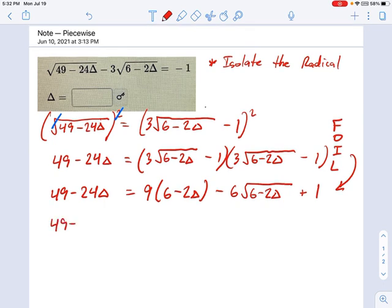And let's keep going here. We have 49 minus 24 delta equals what's 9 times 6, that's 54, 9 times 2 is 18, plus 1, I'm going to get that over there. And let's keep this 6 over to that side, 6 minus 2 delta.